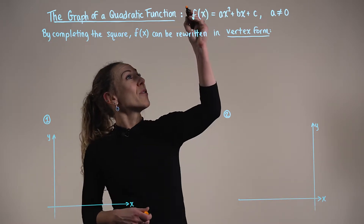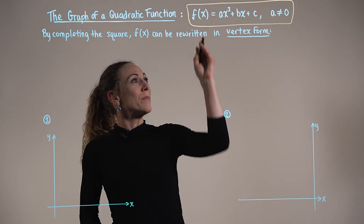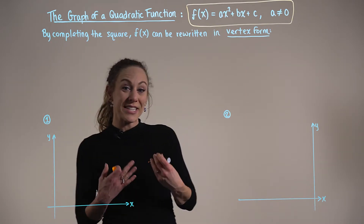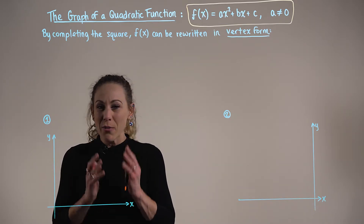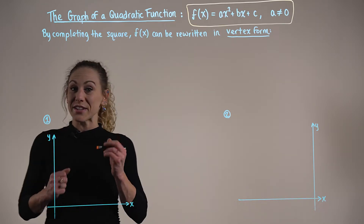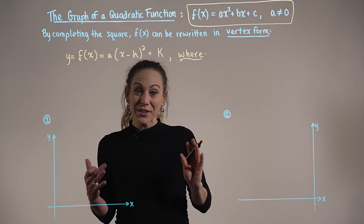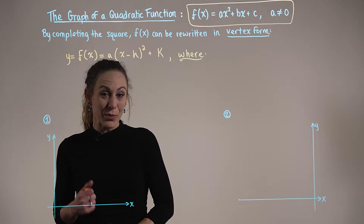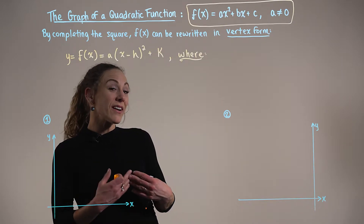While this quadratic function is in standard form, if we take this function and complete the square, we can attain an equivalent vertex form. We'll explore how we complete the square to attain this form shortly, but for now let's consider the notation. Our quadratic function in vertex form is defined as y = a(x − h)² + k.